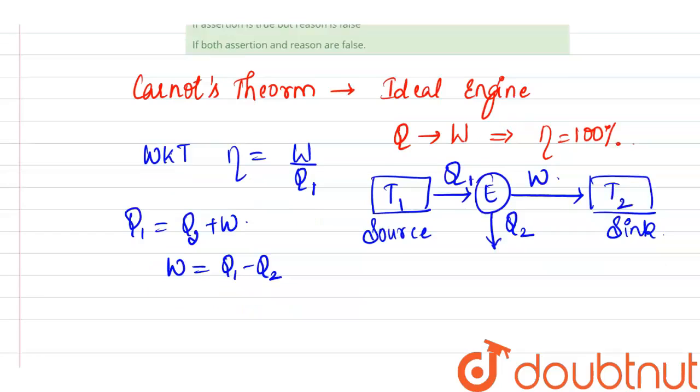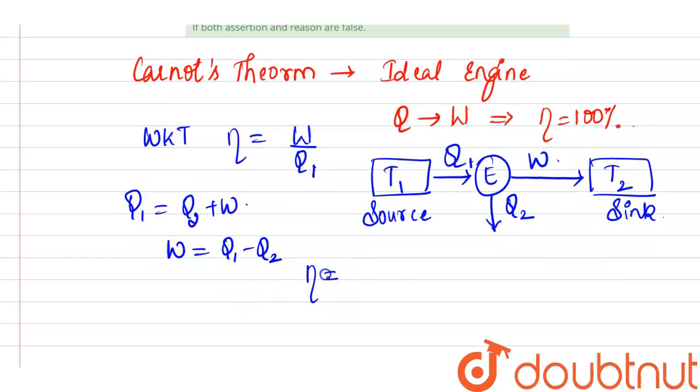This will be heat absorbed Q1. So, eta will now be nothing but Q1 minus Q2 divided by Q1 which is nothing but 1 minus Q2 by Q1.